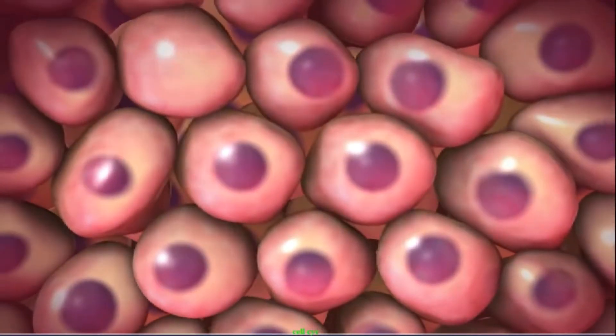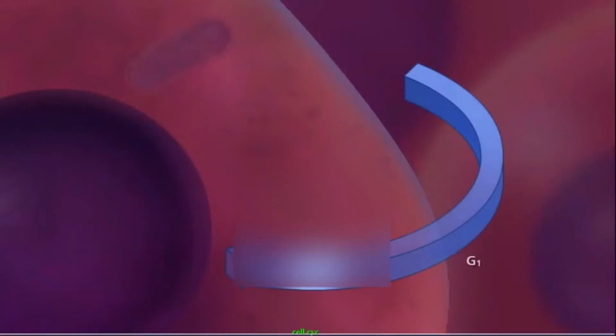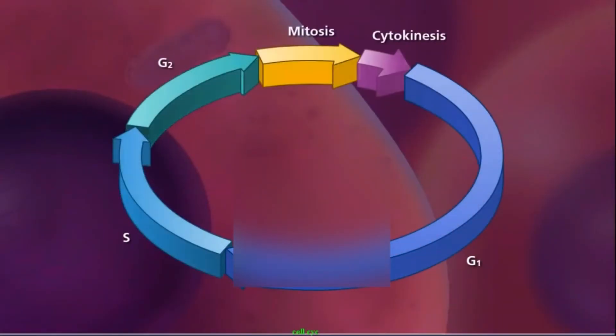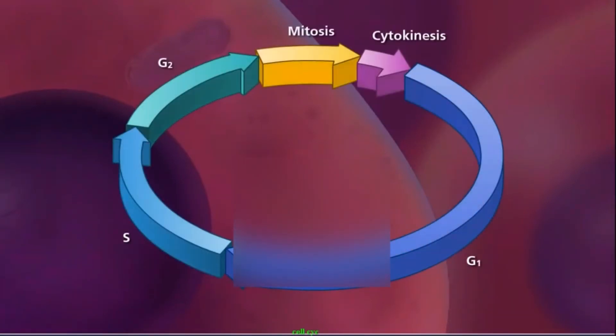Before digging into mitosis let's take a look at the cell cycle. The cell cycle is the process a cell undertakes to replicate all its material and divide into two identical cells. It is made up of interphase, mitosis, and cytokinesis.